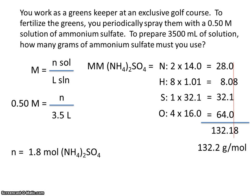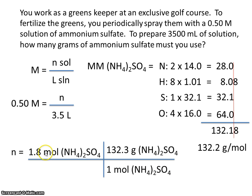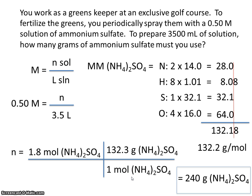Now we'll use that as a conversion factor, so moles in the numerator and moles in the denominator cancel out. Our final answer should have 2 sig figs — 1.8 has 2 sig figs, and 132.2 has 4 sig figs, so our answer has 2 sig figs: 240 grams of ammonium sulfate.